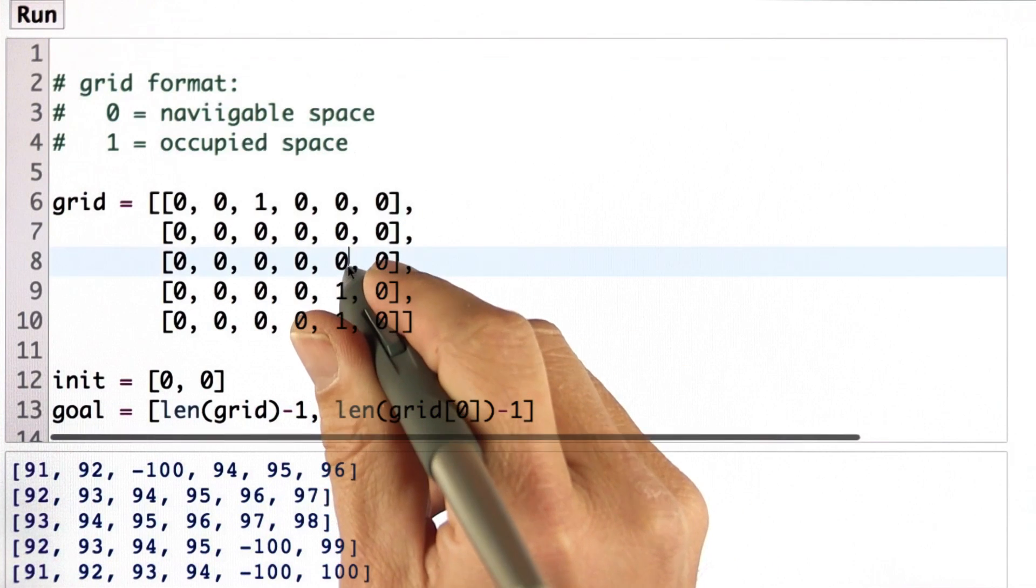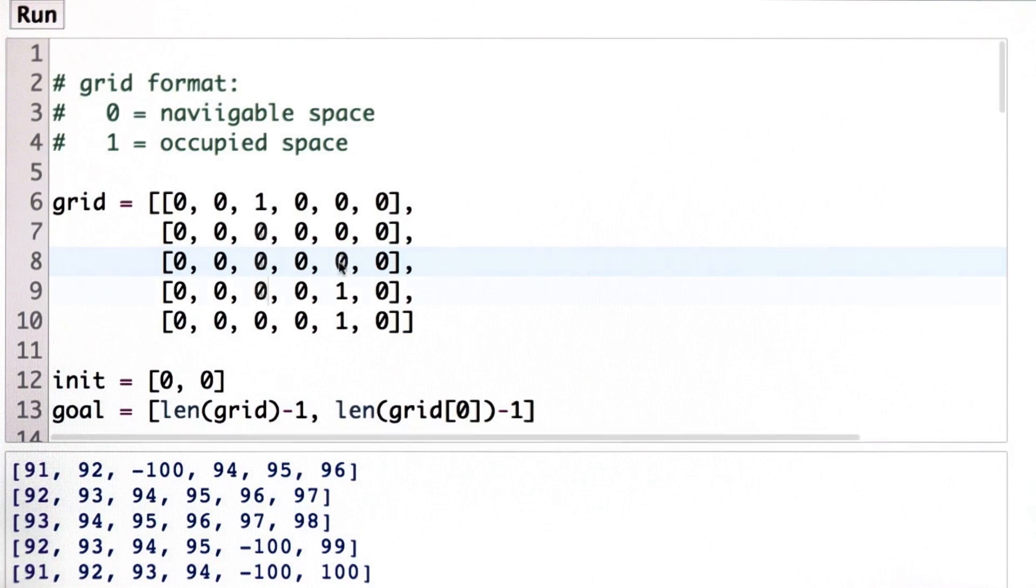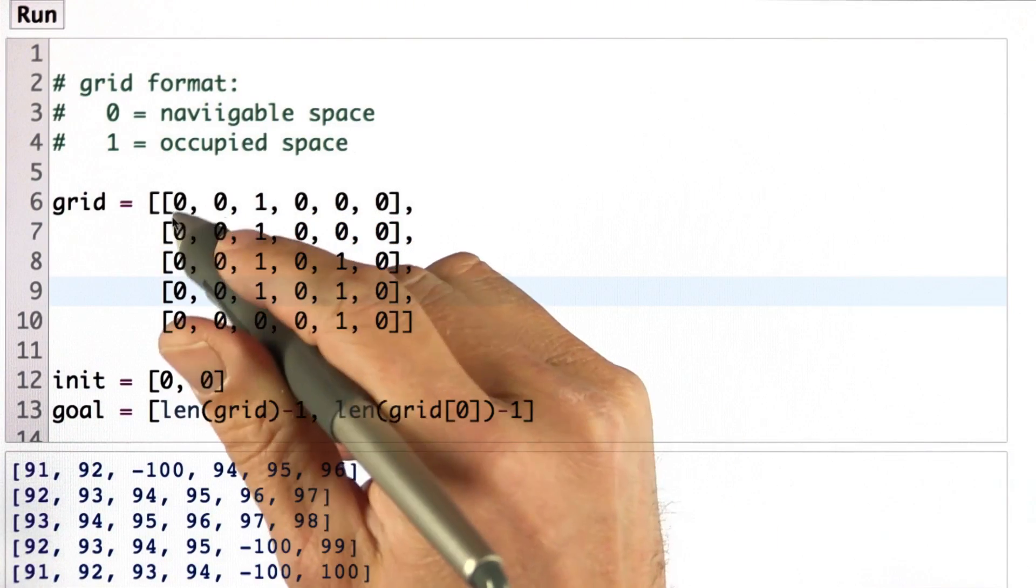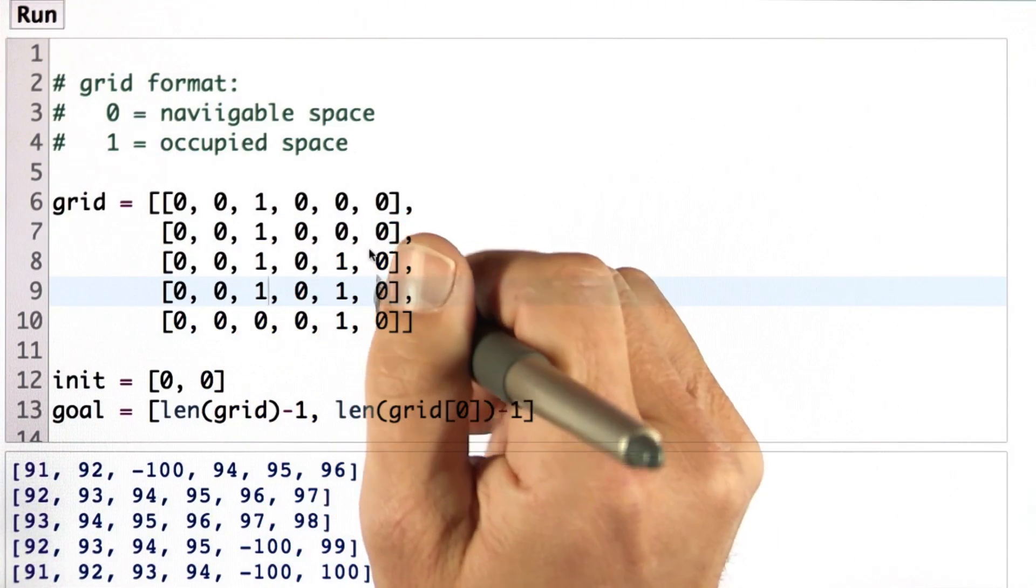We can set in arbitrary obstacles like a wall over here and a wall over here that forces the robot into a kind of an S-curve around the corner.